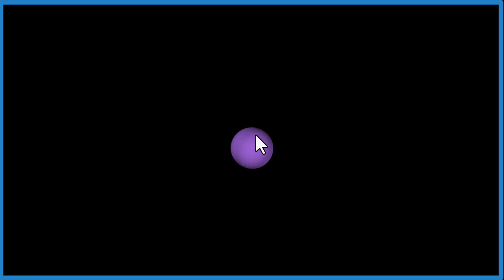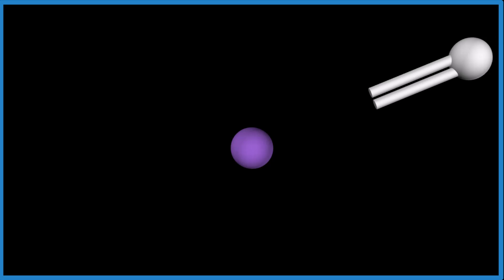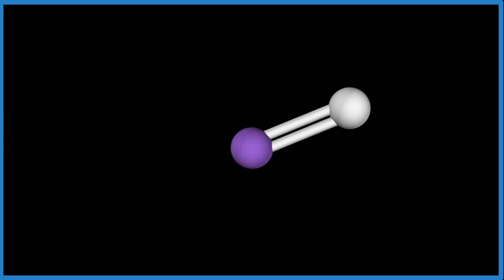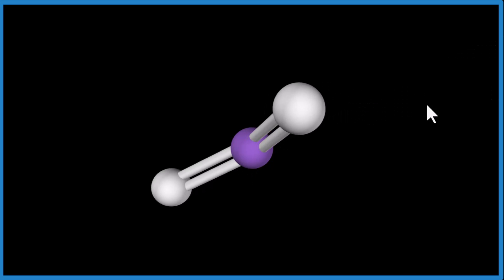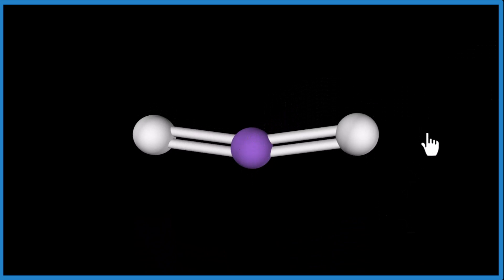So imagine the purple here, that's that central atom, the carbon. And we're going to add an oxygen that's double bonded there. And when we add the other double bonded oxygen, watch how they push each other away. So now they're on opposite sides.